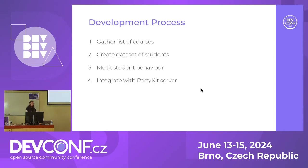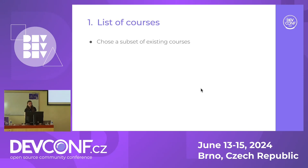There are four main steps to the development process: gather a list of courses, generate the dataset of students, mock the student behavior, and integrate with the PartyKit server, which helps with real-time listing across the whole system. Getting the list of courses was relatively simple — there's already a gallery on the tutors website showing what courses are present. We worked with lecturers in the college to get a subset of courses we knew would be long-lasting, so we could safely put them into the simulator knowing they'd always be open and available.